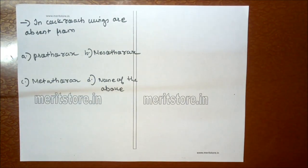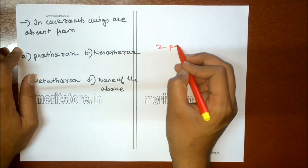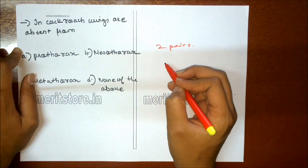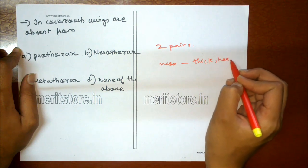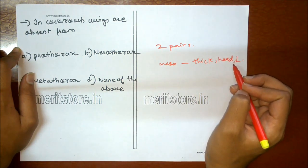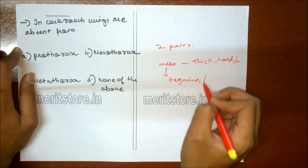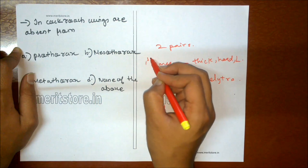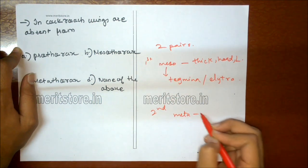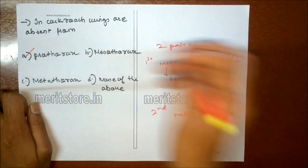In cockroach, wings are absent from: A prothorax, B mesothorax, C metathorax, D none of the above. Cockroach has two pairs of wings. The first pair on the mesothorax are thick, hard, and leathery — protective in function, called tegmina or elytra. The second pair on the metathorax are thin, soft, and membranous. So the wings are absent from the prothorax. Option A is the correct answer.